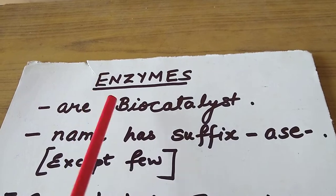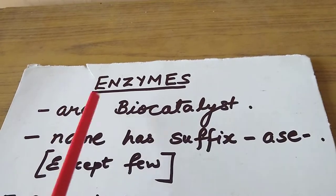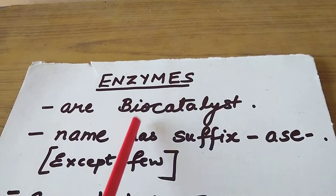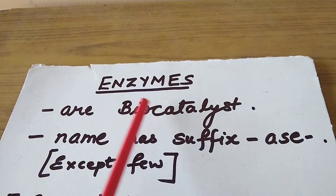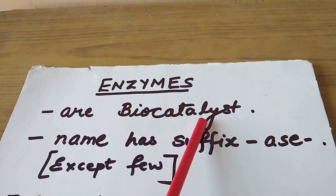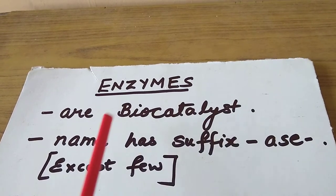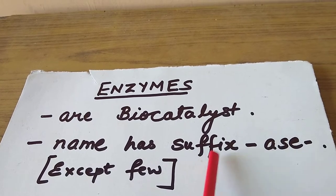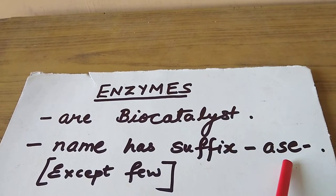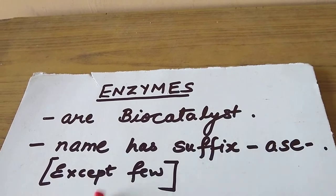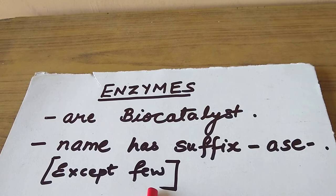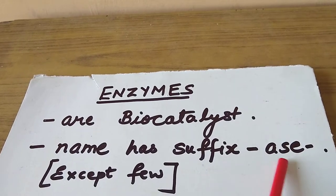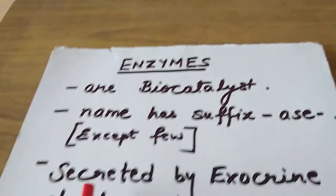In one word questions, if the meaning of enzymes is asked, you have to write: enzymes are biocatalysts. Their names are written with the suffix "-ase", except for a few such as trypsin or pepsin, which do not have "-ase" in the suffix.